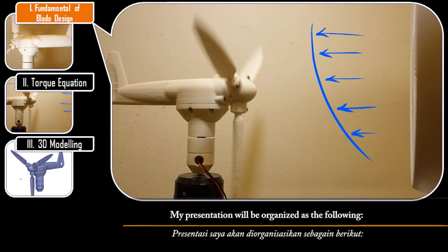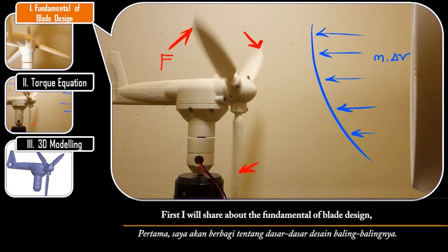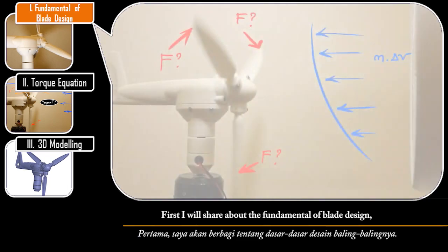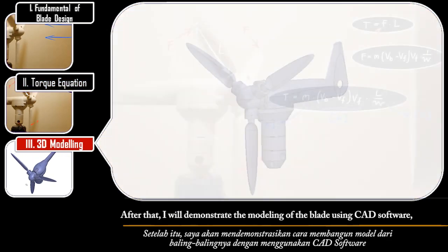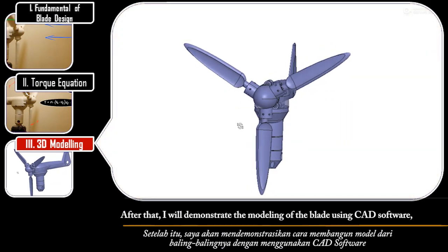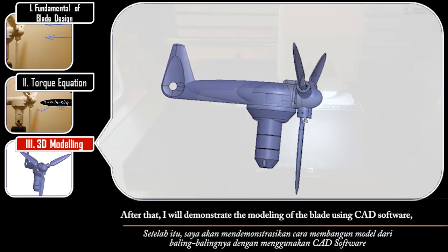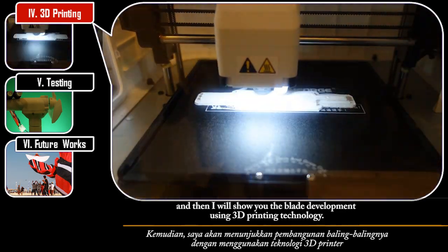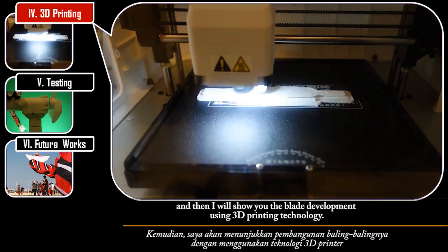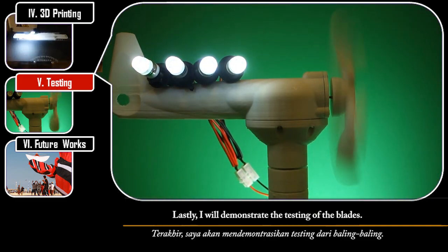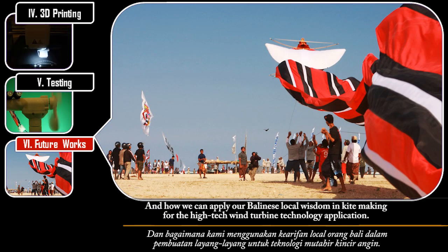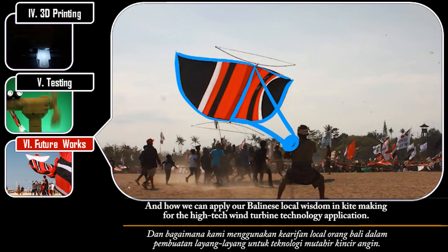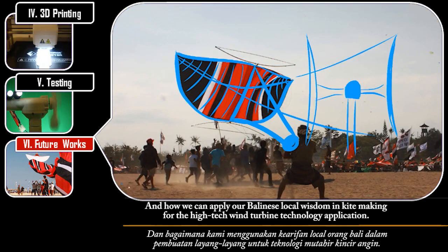My presentation will be organized as follows. First, I will share the fundamentals of blade design. This will be followed by the derivation of the torque equation. After that, I will demonstrate the modeling of the blade using CAD software. Then I will show you the blade development using 3D printing technology. Lastly, I will demonstrate the testing of the blade. At the end of this video, I will share our future works and how we can apply our Balinese local wisdom in kite making for high-tech wind turbine technology application.